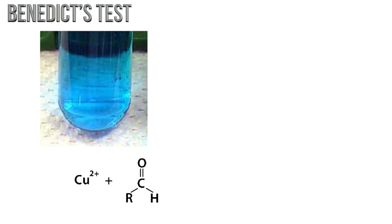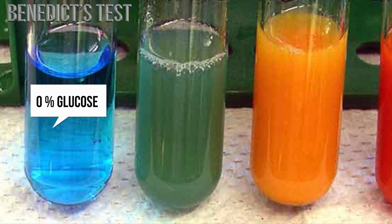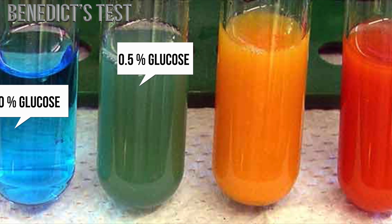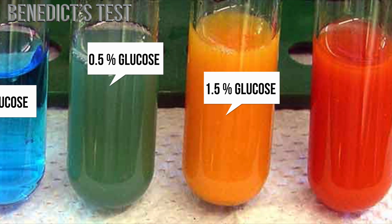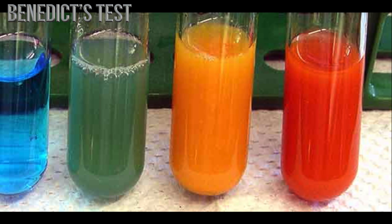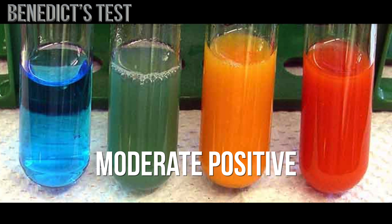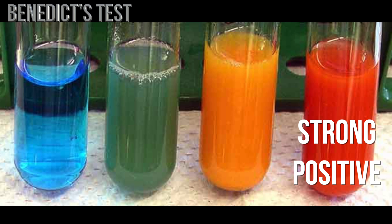Coming back to Benedict's test: Benedict's reagent contains blue copper 2+ ions, which are reduced to red copper oxide. The copper oxide is insoluble in water and forms a precipitate. The color of the final solution depends on the amount of glucose and how many copper 2+ ions are present. Benedict's reagent starts out aqua blue; as it is heated in the presence of glucose, it turns yellow to orange. The more red the final color, the higher the concentration of glucose in the urine sample. In general: blue to blue-green or yellow-green is negative; yellow-green to bright yellow is a moderate positive; and bright orange to red is a very strong positive.